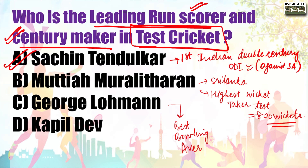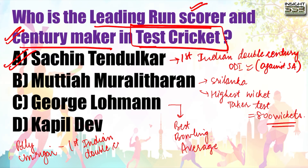Moving on, there is another important piece of information about Polly Umrigar - you may have heard of an award in his name. He was the first Indian to score a double century in test match, and he did it against New Zealand. This is important. These 'first who is who' type questions are very common and come directly as questions in the exam, so we should cover the most important ones, especially those oriented around India.